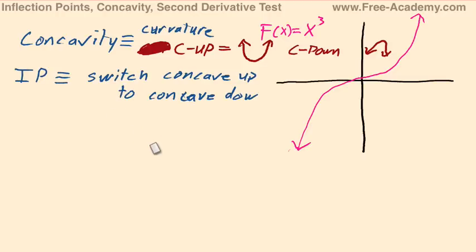Now we're going to explore mathematically how we actually find if something is concave up or concave down. And we're going to do that by using the second derivative test.